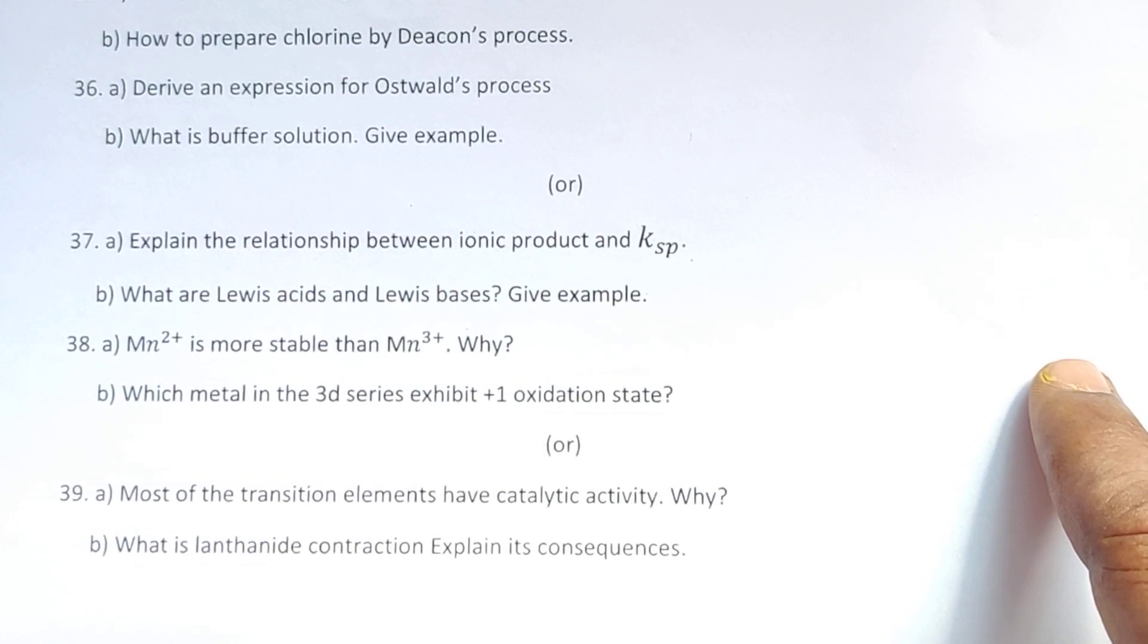Thirty-eight A: Mn²⁺ is more stable than Mn³⁺. Why? B: Which metal in the 3d series exhibits +1 oxidation state? Thirty-nine A: Most of the transition elements have catalytic activity. Why? B: What is lanthanoid contraction and explain its consequences.